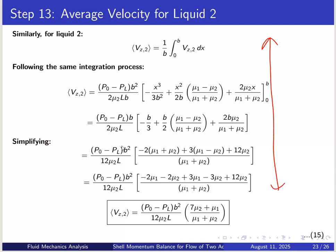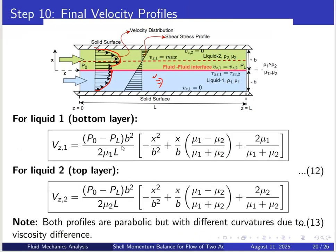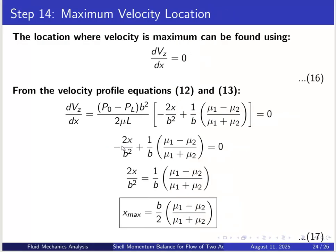The location of maximum velocity is found by setting dVz/dx equals zero (since at maximum velocity the shear stress is zero). After differentiating Vz and setting it to zero, the location is x_max equals (B/2)·(mu1 minus mu2)/(mu1 plus mu2). From the velocity profile, the maximum velocity occurs in the less viscous liquid (liquid 2).